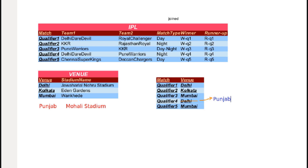We can also delete our venue details without fear of losing the match details. It might require deleting the constraints present, but I'll discuss about the constraints in a separate tutorial. We successfully normalized our table into third normal form. See you in the next tutorial.